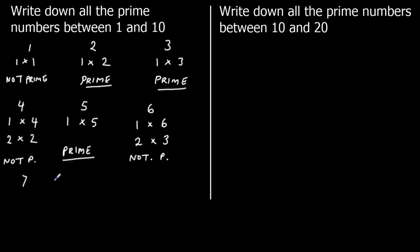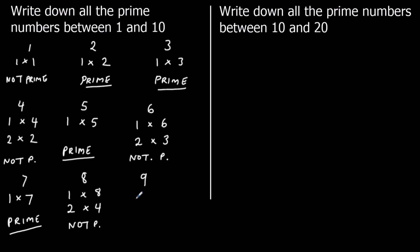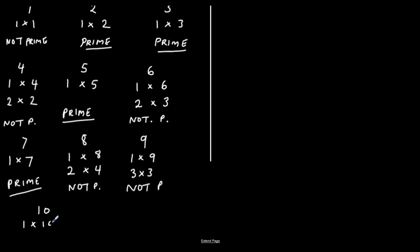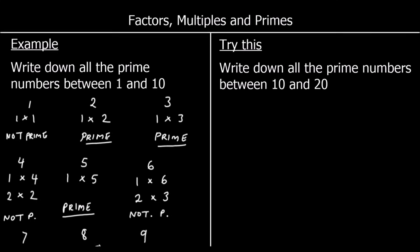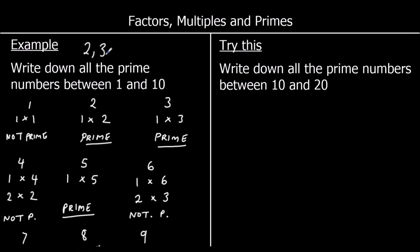7 is only 1 times 7, not in any other times tables, so 7 is prime. 8 is 1 times 8 and 2 times 4, so it's not prime. 9 is 1 times 9 and in the 3 times table, so it's not prime. And 10 is 1 times 10 and 2 times 5, so it's not prime either. So all the prime numbers between 1 and 10 are 2, 3, 5, and 7.